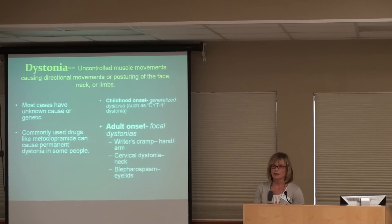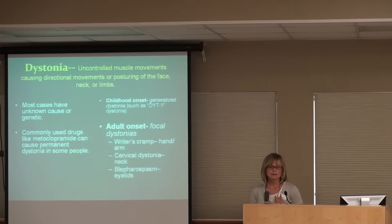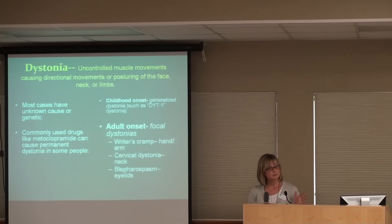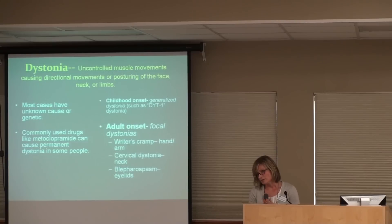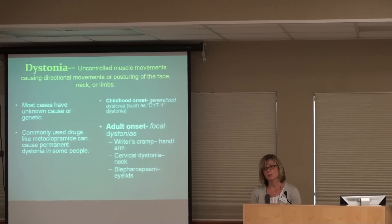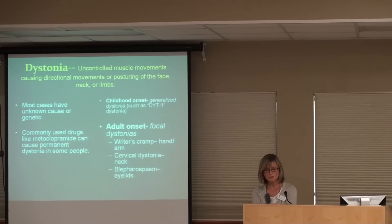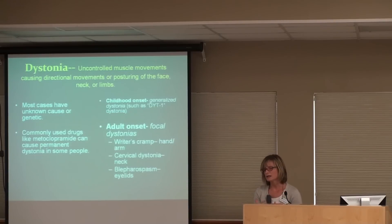Dystonia can affect any part of the body — face, neck, arms, limbs, legs. Most cases of dystonia have an unknown cause. There's a big difference between childhood onset dystonias and adult onset. Children can develop dystonia and when they do, it's usually a genetic condition inherited through a family. Most cases in children are connected to a gene called DYT1. When it starts in childhood, it tends to spread to affect the whole body and can cause the child a great deal of trouble walking.